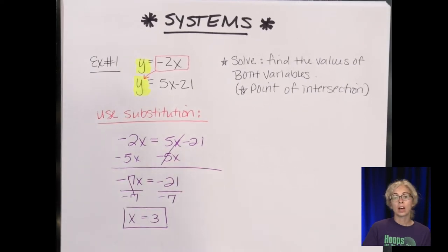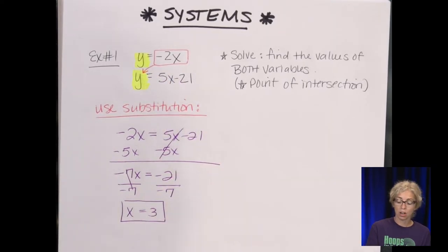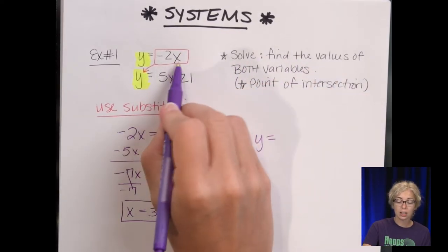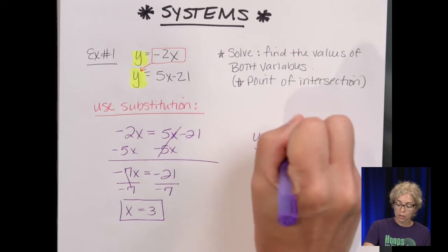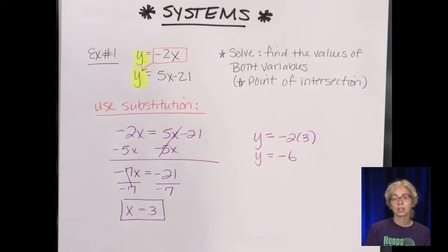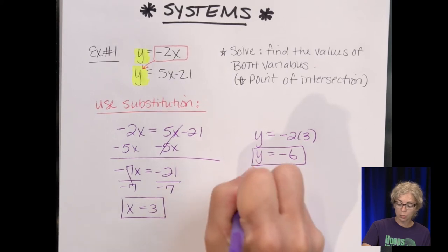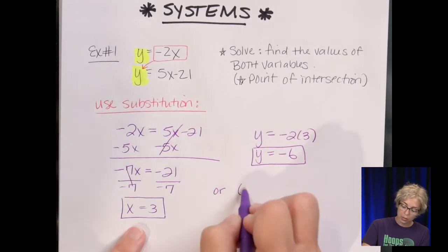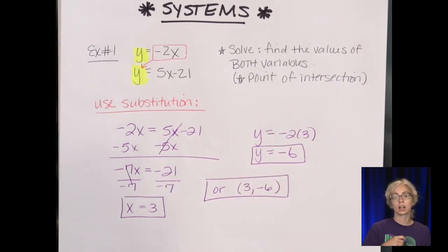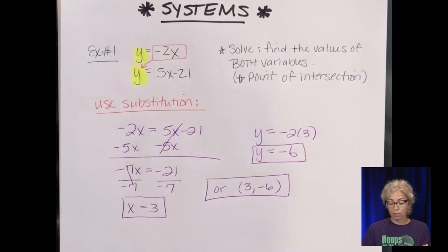We have the value of x; now we need y. You can take either equation and plug x in. Using the first equation, y equals negative 2 times 3, so y equals negative 6. The answer can be written separately or as a point — the point is written x first then y, so the answer is (3, negative 6). You should check in both equations or graph them on your calculator.